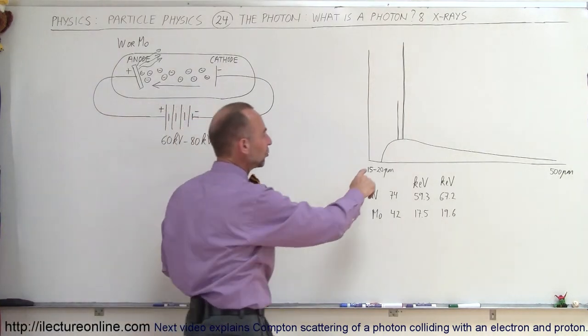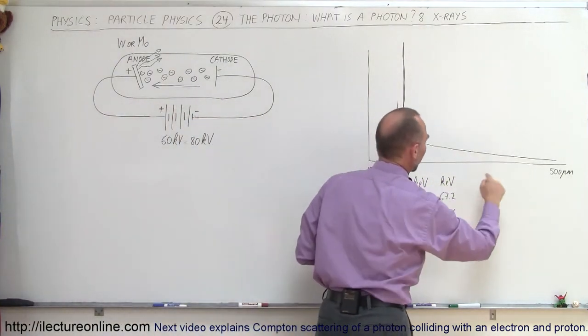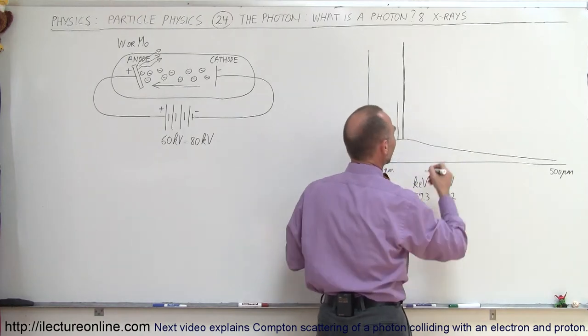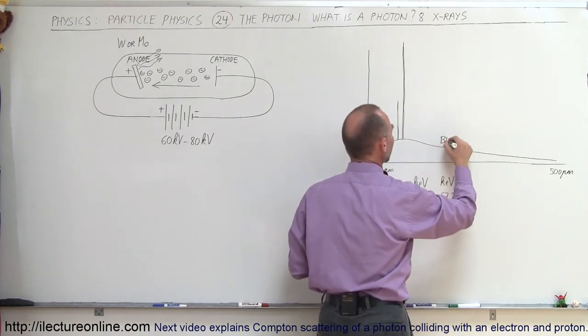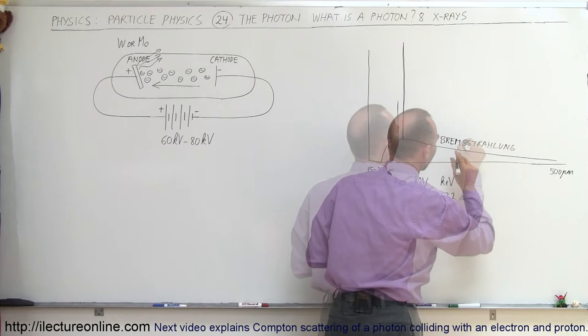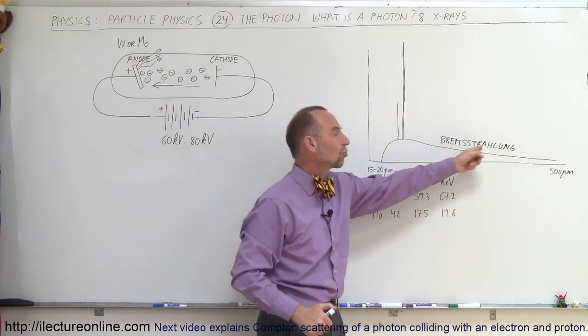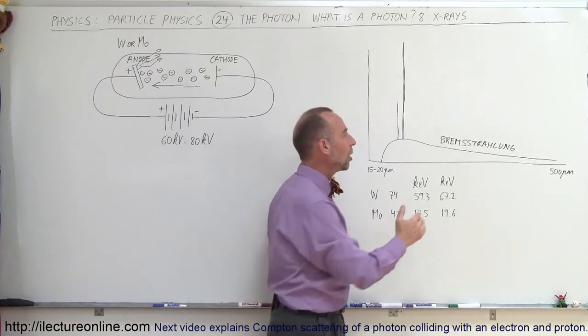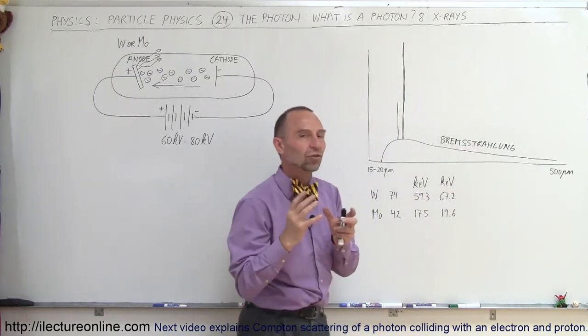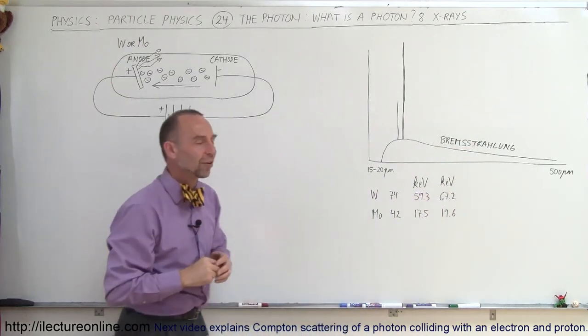The first radiation is what we see in the shape of a black body curve, and this is what we call the bremsstrahlung. And what that means is brehm means breaking in German, and strahlung means radiation. This is what we call the breaking radiation.